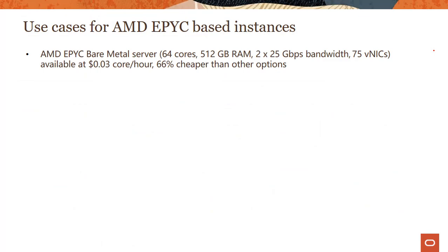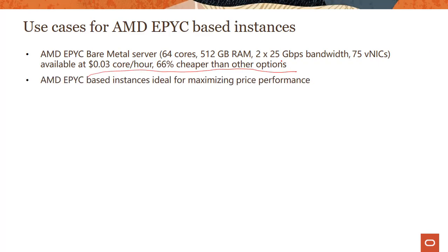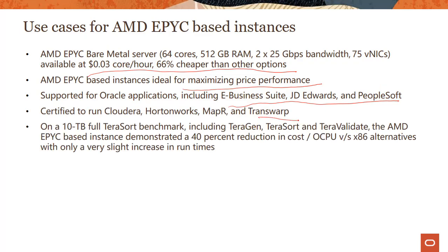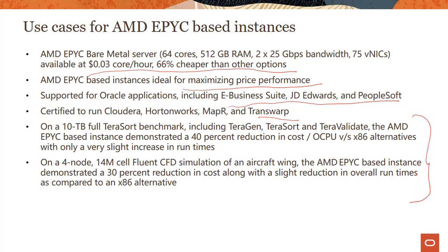For AMD EPYC-based instances, the first thing is these are cheaper — 66% cheaper than other options, predominantly Intel. These are ideal for maximizing price performance. Any time you are concerned about price performance, you can go with the EPYC AMD instances. All Oracle apps are certified to run on AMD. There are various scenarios like big data and HPC — for example, computational fluid dynamics — where the AMD instances perform well in that price-performance range.